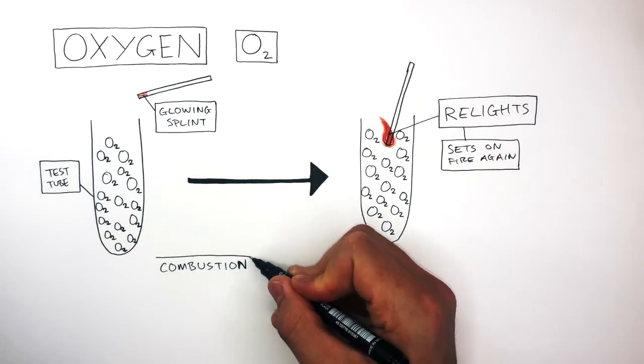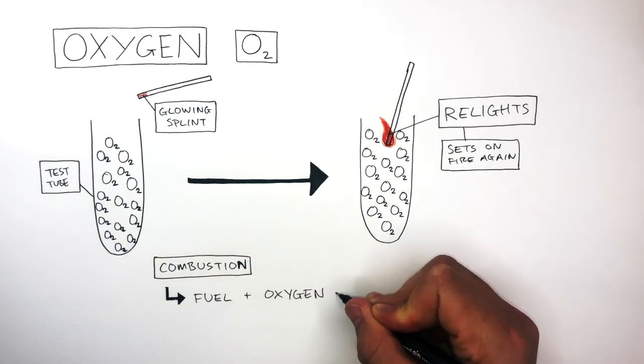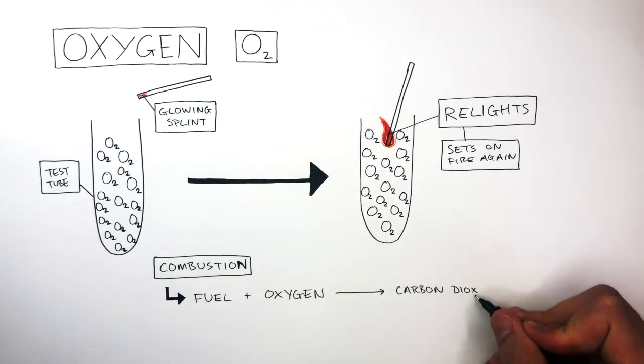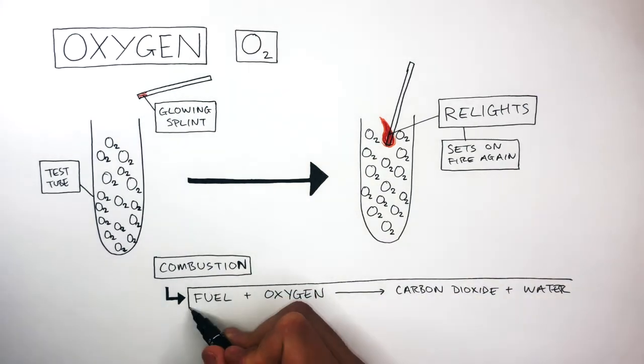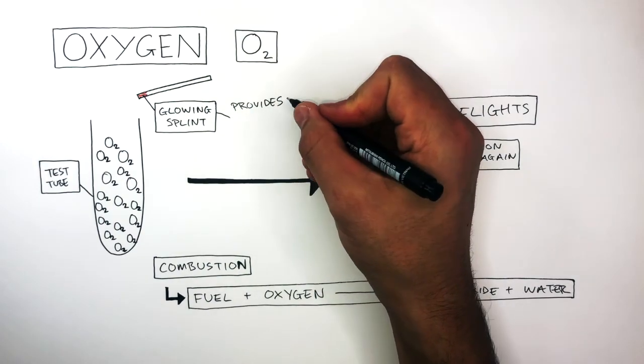Combustion was the chemical reaction that occurred here. Fuel reacted with oxygen to form carbon dioxide and water, and the reaction occurred because the glowing splint provided the initial heat.